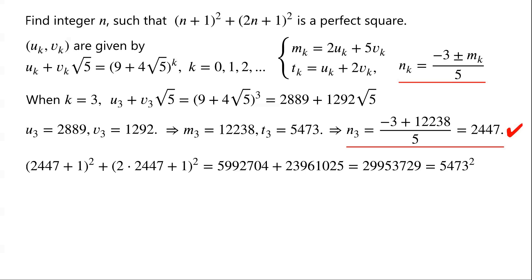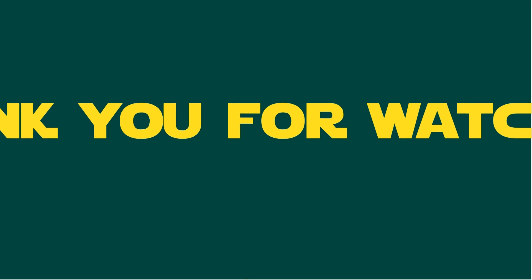So the problem has infinitely many integer solutions. Example solutions are n = −1, 7, −137, 2447, and so on.